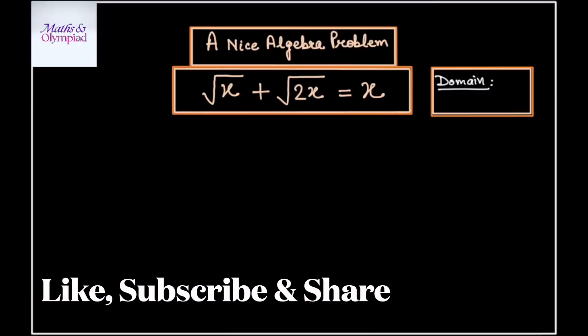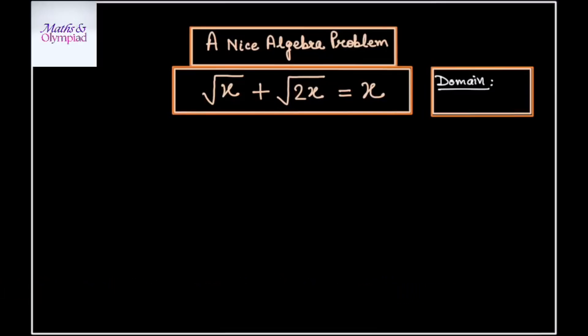Welcome back to my channel Maths and Olympiad. In this video, I am taking up a nice algebra question from Maths Olympiad which says: square root of x plus square root of 2 times x equals x. Since we have a variable inside the square root, x has to be greater than or equal to zero, because the square root of a negative number is not defined in the real number system. So let's get started without any further delay.